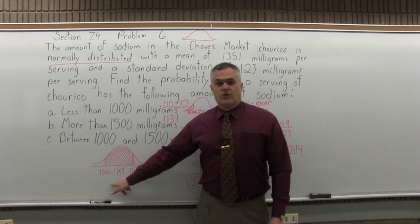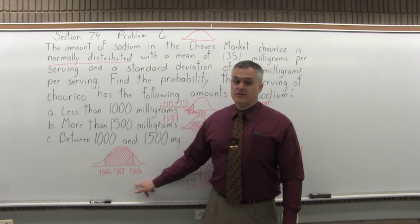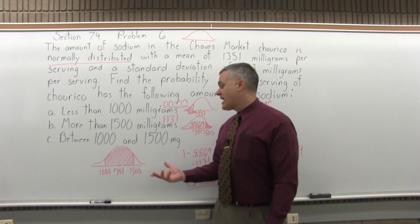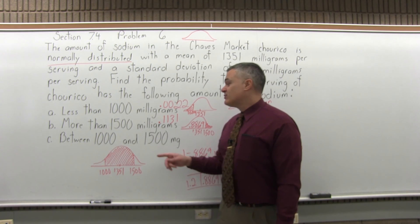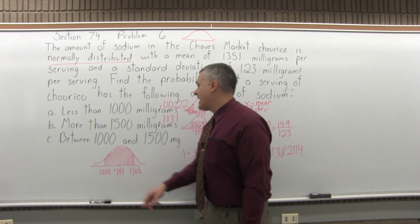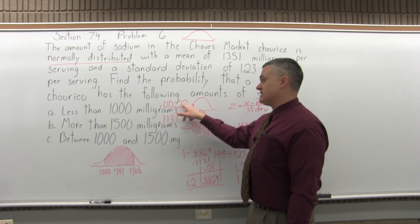Ordinarily, what you have to do is find the z-score for each endpoint of that interval, look up the z-score in the chart, get two chart values, and subtract the two chart values. But the thing is, we've already done that in parts A and B. The chart value for 1,000 is .0022. We already did it.